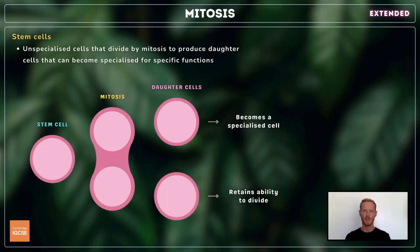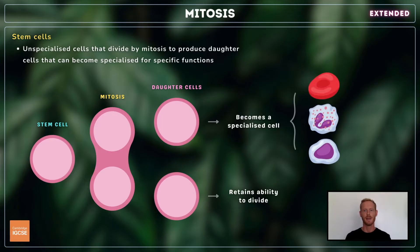Stem cells are unspecialised cells in the body that divide by mitosis to produce daughter cells that can become specialised for specific functions. For example, hematopoietic stem cells are a type of adult stem cell found in bone marrow. They divide continually to produce a range of blood cells, including red blood cells, phagocytes, and lymphocytes.